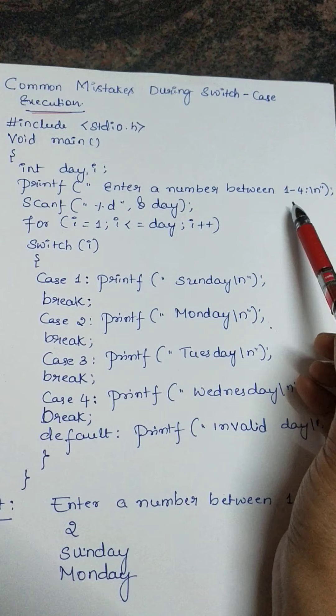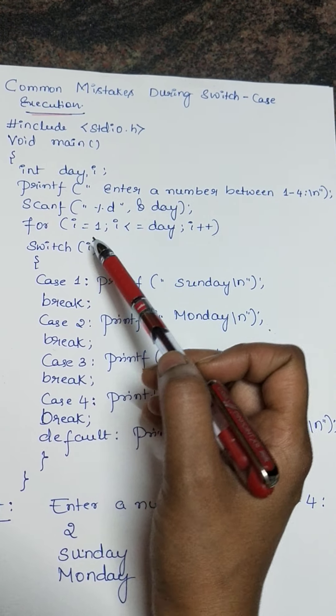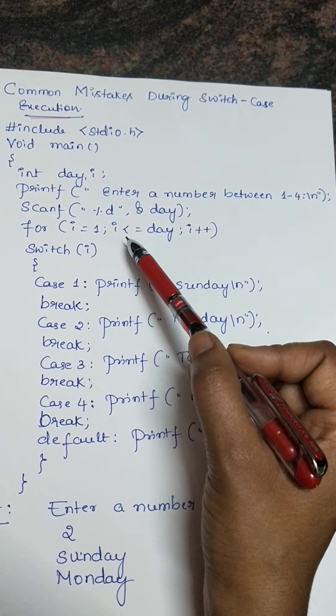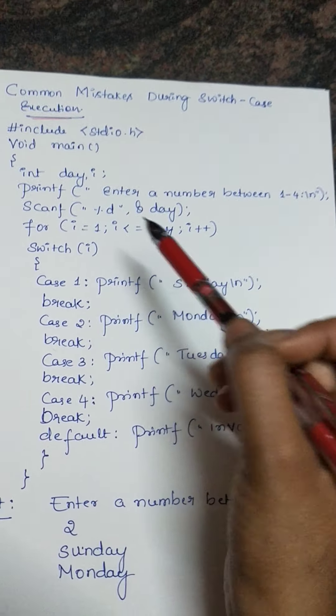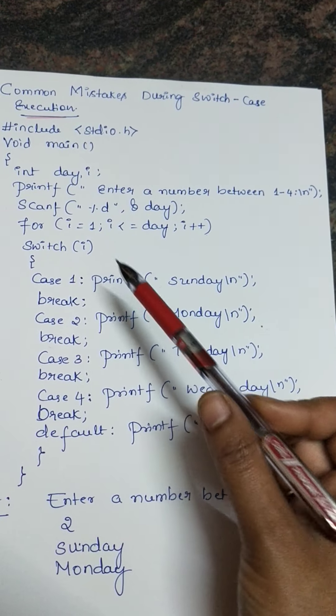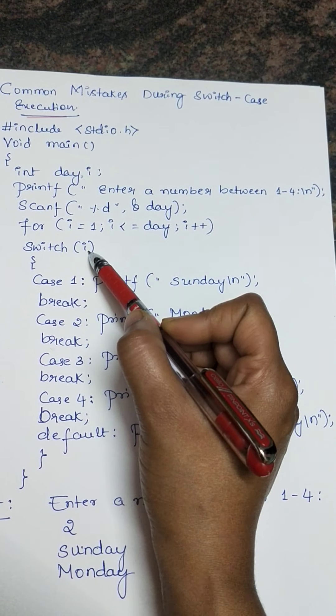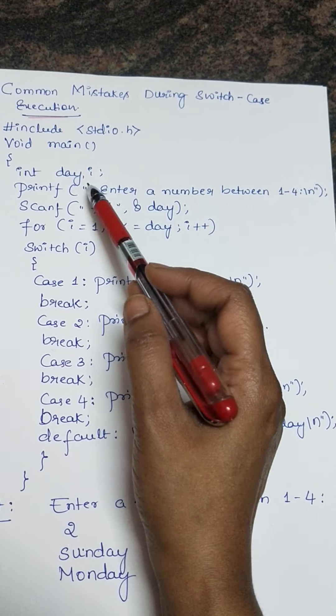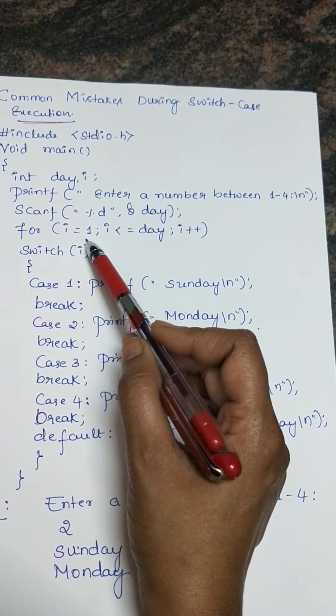Now let us see the switch statement. The switch statement I am just giving i as the parameter. What is i? i is an integer. And what is the initial value of i? i is 1.